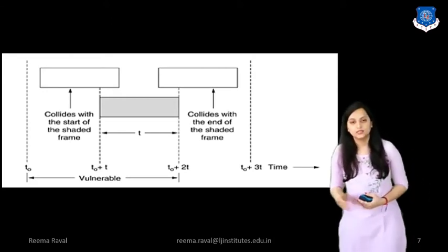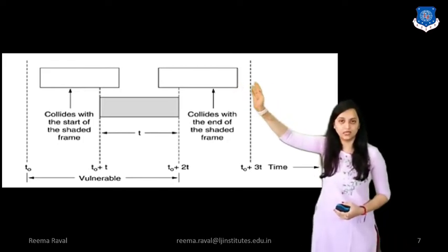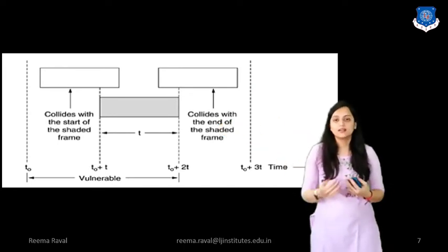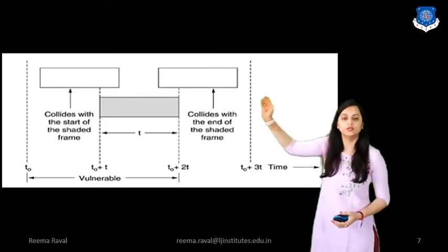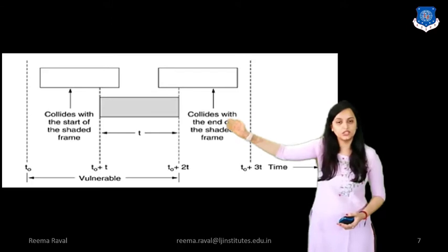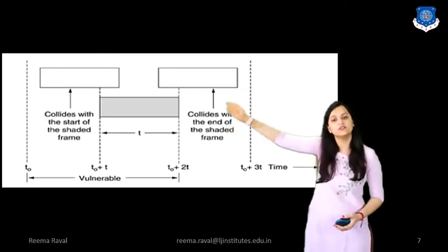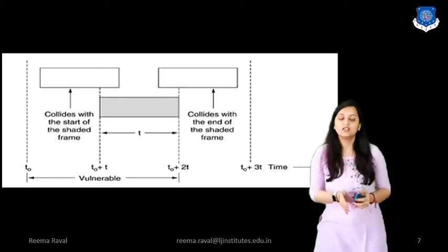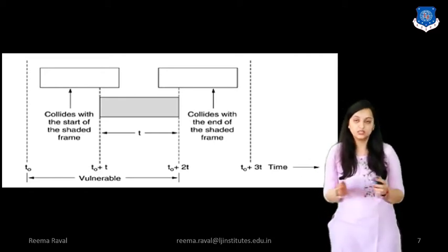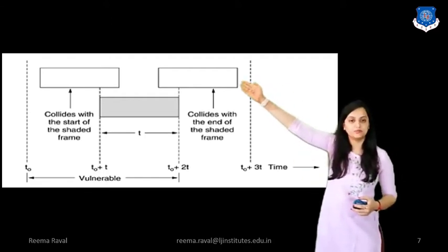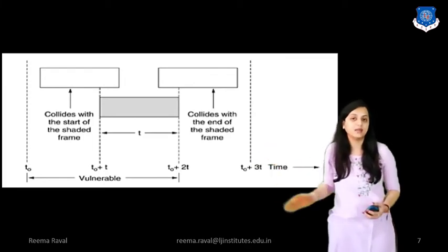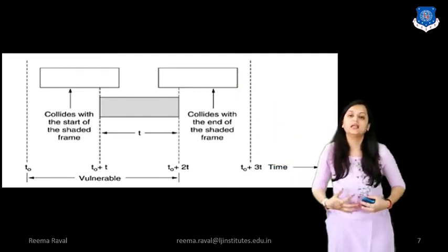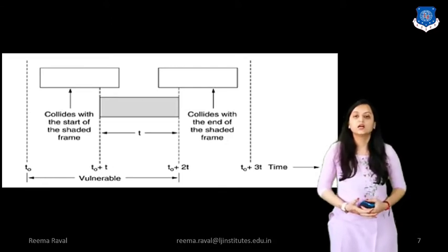As you can see, frames that are not shaded are received correctly. But the ending of one frame is colliding with another frame, and the starting of the shaded frame collides with the adjacent frame. As collision occurs, three of the frames will be lost. If the shaded frame had not been transmitted during that time, the two other frames would have been received correctly. But as frames collide, data from the overlapping frames is lost. This occurs in the Pure ALOHA case.